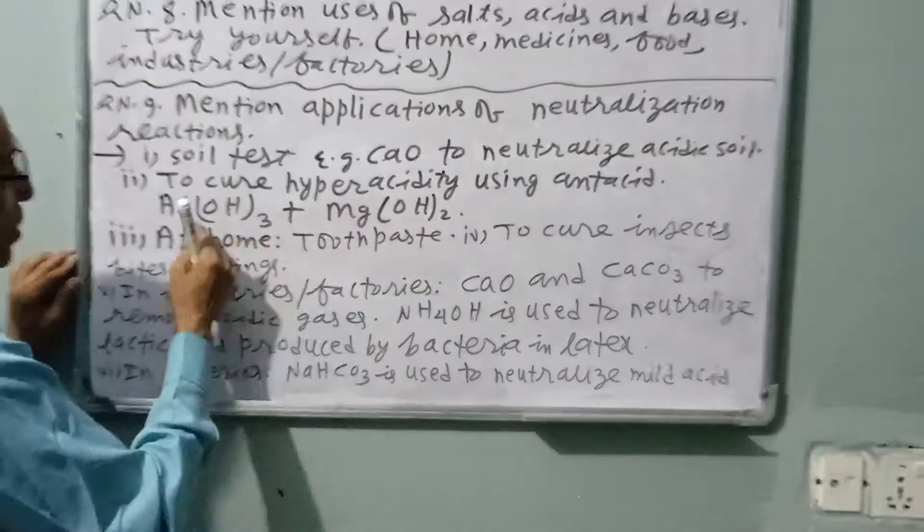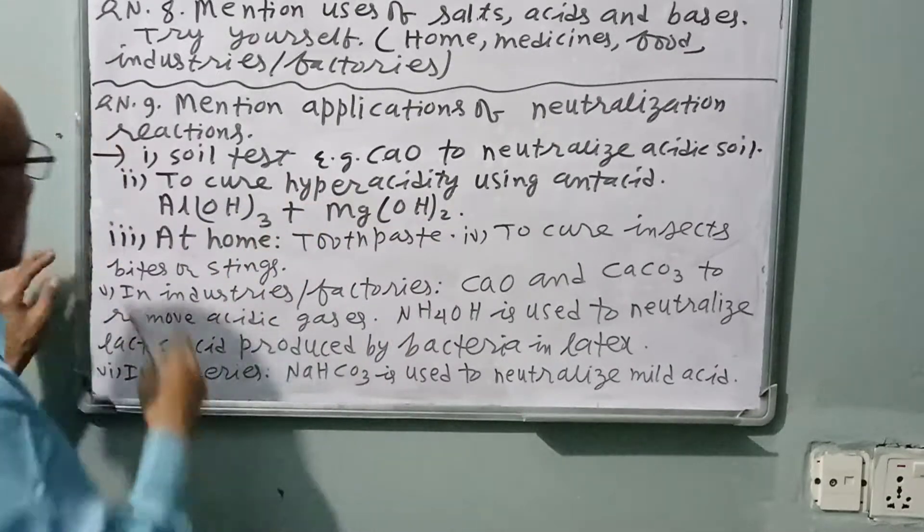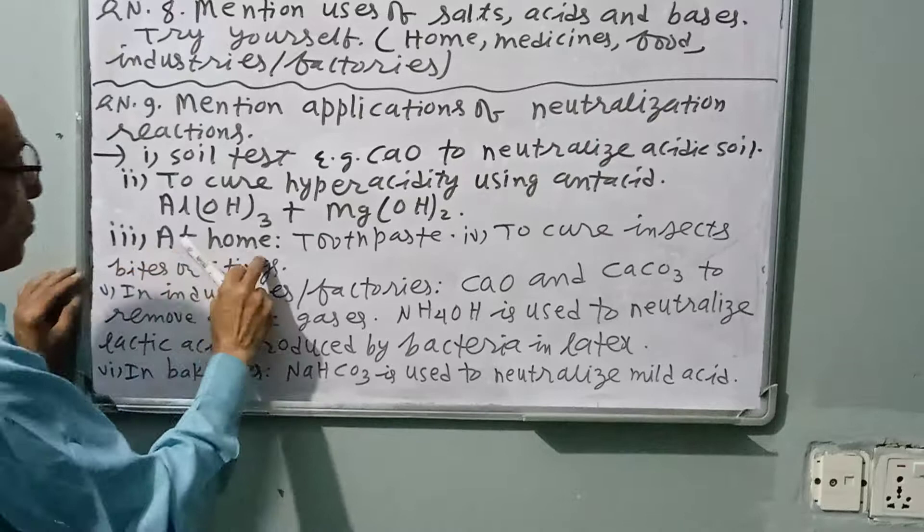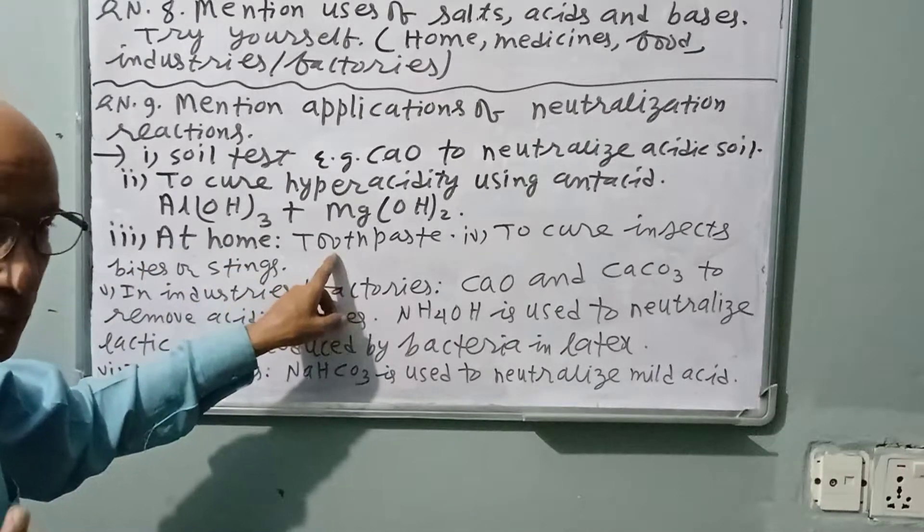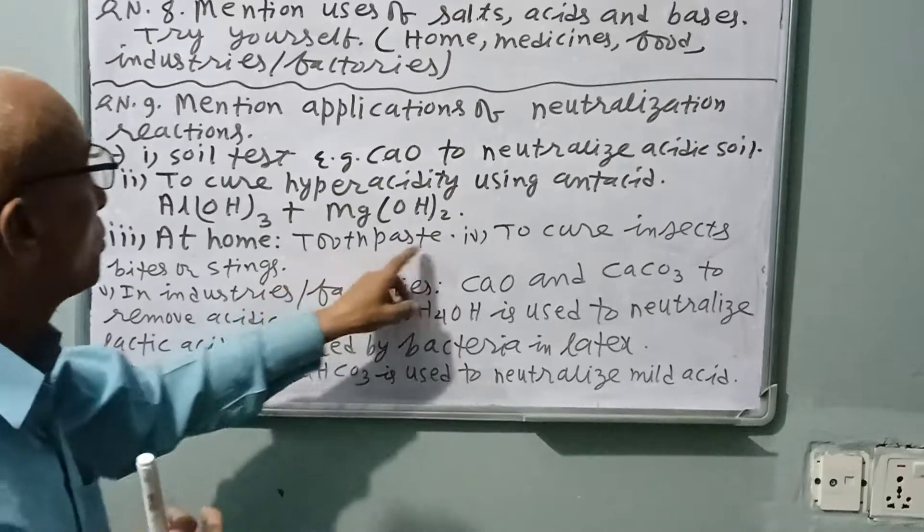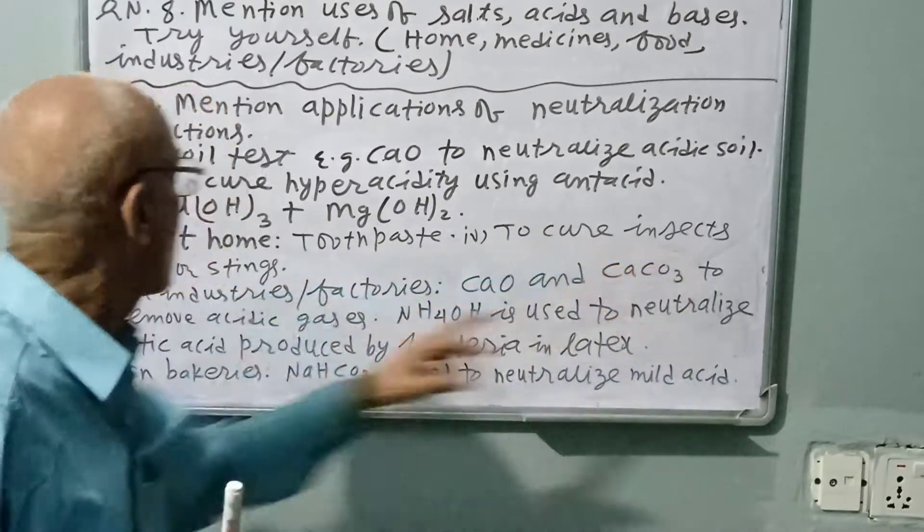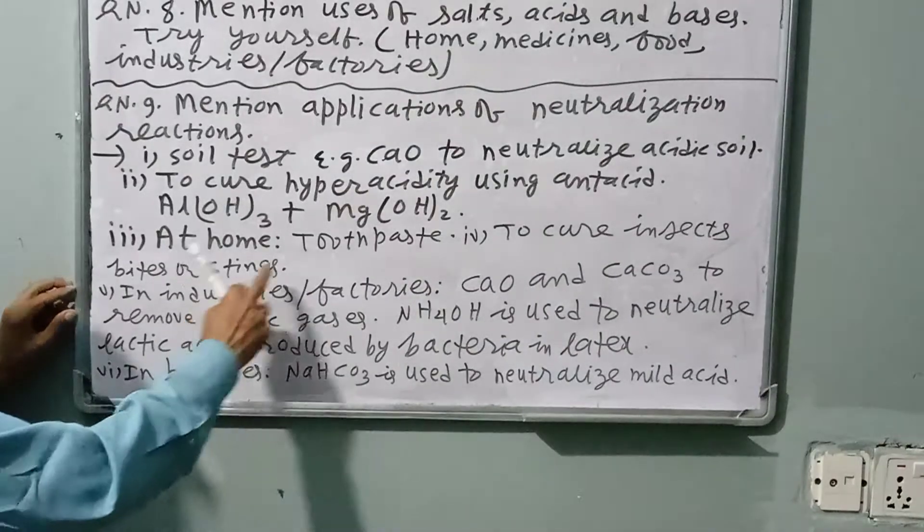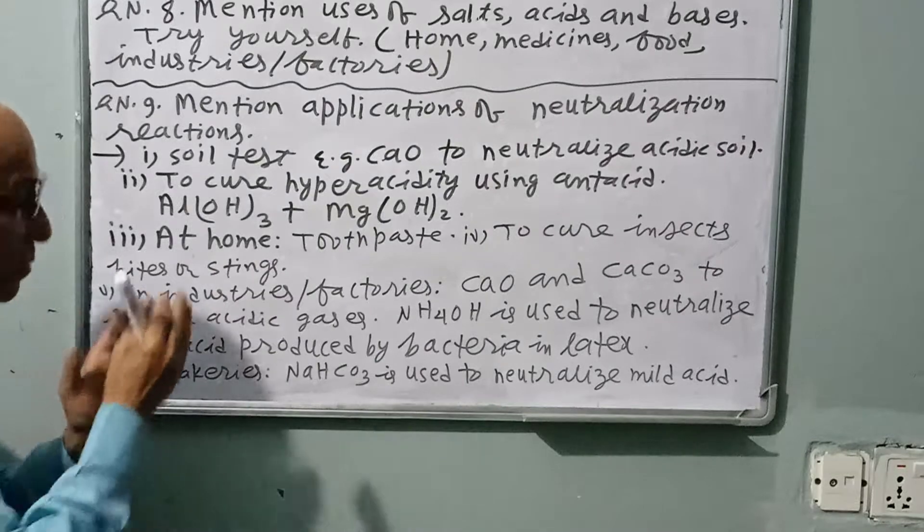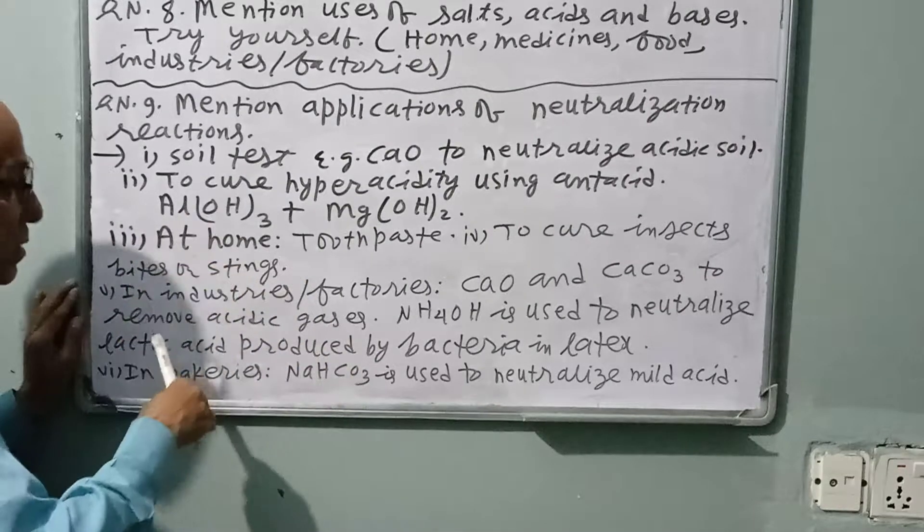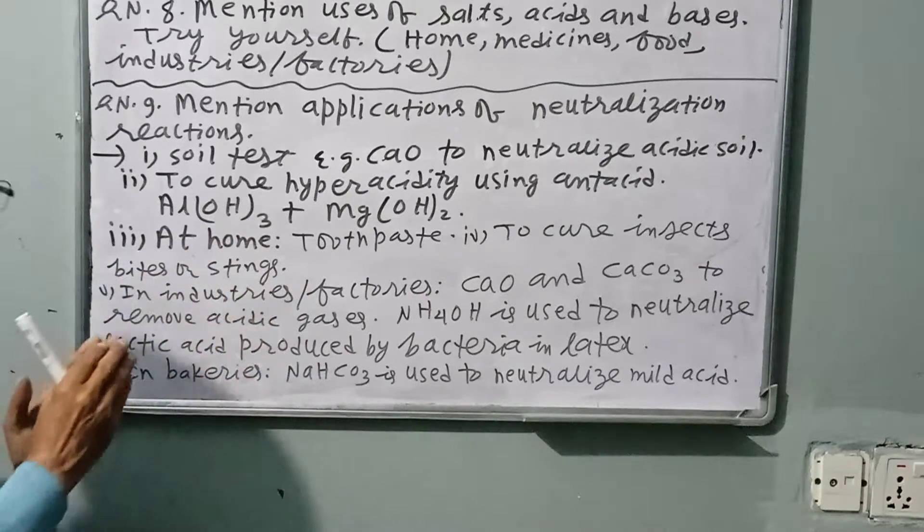Number three: At home, we use different types of bases like toothpaste and soap to cure insect bites or stings. If there is acid, we have to use base. If there is base, we have to use acid. Acid to neutralize base, base to neutralize acid.